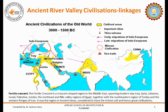All of these ancient river valley civilizations were not completely isolated. They had linkages, there were important cities, sea trade and migration. The Fertile Crescent is a crescent-shaped region in the Middle East spanning modern day Iraq, Syria, Lebanon, Israel, Palestine, Jordan, the northeast and Nile Valley regions of Egypt, together with the southeastern region of Turkey and the western fringes of Iran. It was a region in ancient times considered to have the richest soil, and hence great civilizations could come up here.